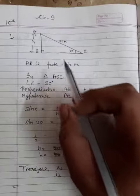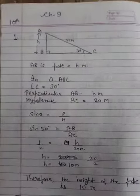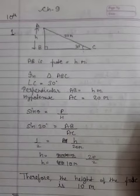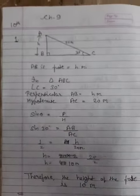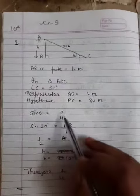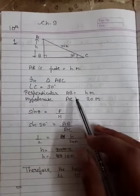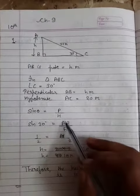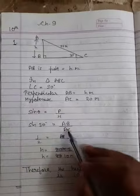Now what trigonometric ratio involves height and hypotenuse? Sin theta, because sin theta equals perpendicular over hypotenuse. So sin theta equals p over h. For sin 30 degrees, p is AB and h is the hypotenuse AC which is 20 meters.